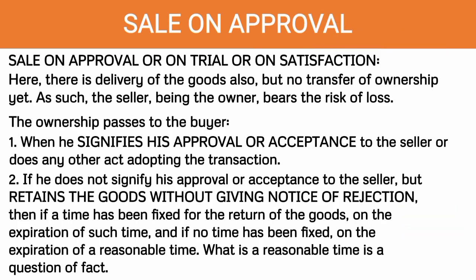Unlike in a sale on approval, on trial, or on satisfaction, the delivery of the goods is precisely for inspection only — for the buyer to try the goods or to determine whether he or she will buy them. So there is no transfer of ownership. The purpose of delivery is only for the buyer to inspect whether he will approve, try, or be satisfied. That is why the alternative terms are 'sale on trial' or 'sale on satisfaction.' In this case, there will be delivery of goods similar to sale or return, but there is no transfer of ownership. As such, prior to approval on the part of the buyer, the risk of loss remains with the seller, who is still the owner even after delivery.